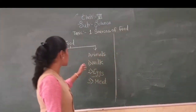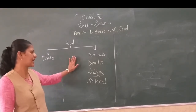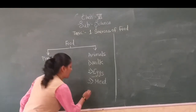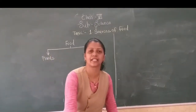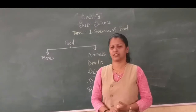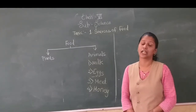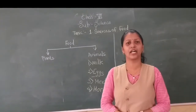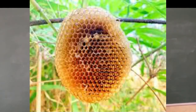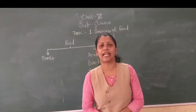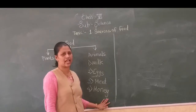Also, the most important animal product is honey. Which animal do we get honey from? From the honeybee. We get honey from the honeybee. You might have seen the honeycomb — from this honeycomb we can get honey. Honey is also used as a medicine.